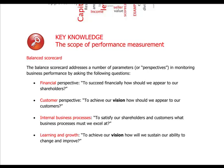The first category of non-financial indicators is the balanced scorecard, which addresses a number of parameters or perspectives in monitoring business performance. That's the financial, customer, internal business process, and learning and growth perspective — the four blocks which the company must look at when assessing business performance. Usually we are only dealing with the financial perspective and these are the usual financial indicators we are monitoring.